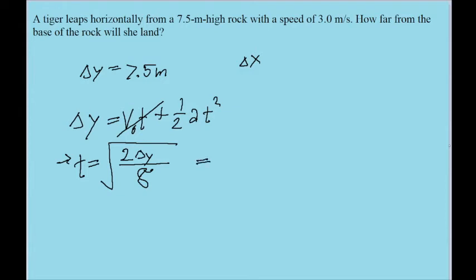And if we put this into our calculator, if we put into our calculators the square root of 2 times delta y, the change in height, which is 7.5 meters, and then divide that by 9.81, all that in the square root. And we find a time of about 1.237 seconds. So that's how long it takes the tiger to reach the bottom.